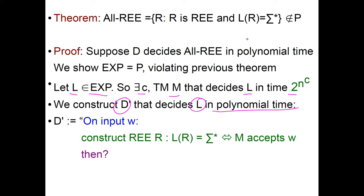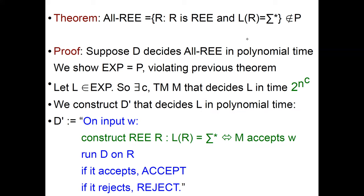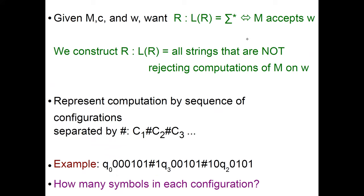We define machine D' that on input W constructs an RE↑ expression R such that the language of R equals sigma star if and only if M accepts W. Then we run D on R and return the answer — if D accepts we accept, otherwise we reject. This is just a plain reduction, very similar to the proof that all-CFG is not decidable. The bulk of the proof is to construct this expression R.